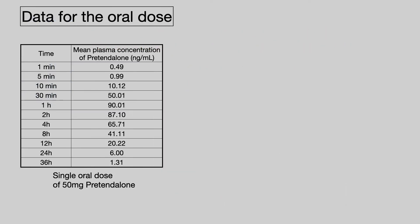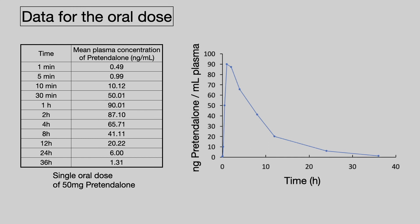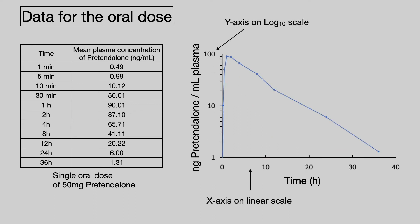And here is a summary of the data for the 50 milligram oral dose of pretend alone. Presented with data like these, then our natural tendency is to draw a graph. And here is a graph of those data. Now, this is a perfectly legitimate plot of the data, but it is not the typical plot used in pharmacokinetics. What we do is we change the y-axis to a logarithmic scale. In other words, this is a semi-log plot.